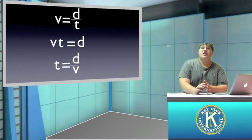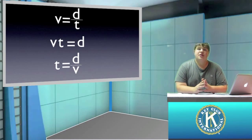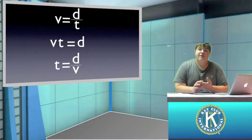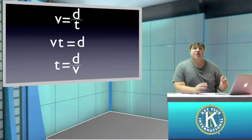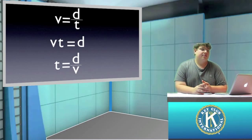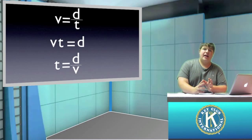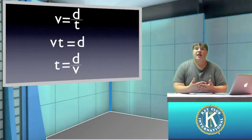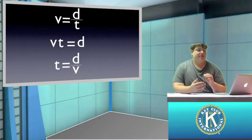So from the original equation v equals d over t, we're able to find two other equations that are equally valid. The important thing to remember is that all three equations are equally valid and each has situations where it's important. We'll need to use them in later videos, but right now it's important that you understand how we found these equations and remember them.